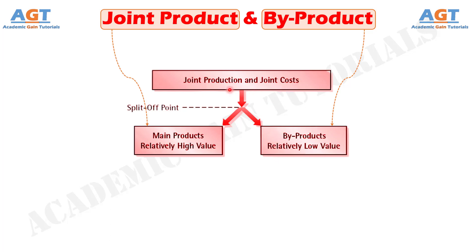For example, suppose the company's objective is to produce two products, product A and product B, side by side, as the initial process and input requirements of the two products are common, then these two will be called joint products. Again, suppose a company's basic aim is the production of product A, but fortuitously B and C are produced during the manufacturing process, then B and C are termed as by-products, as the company had no intention to produce them.